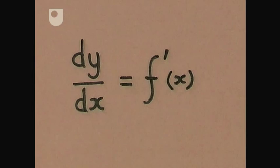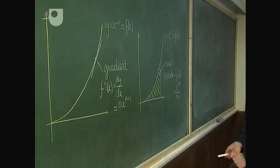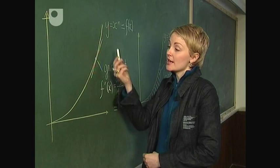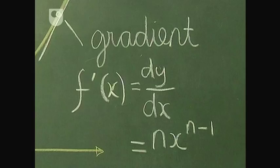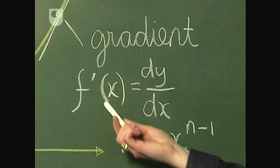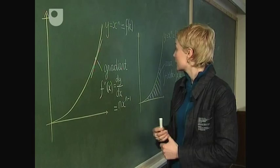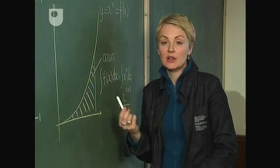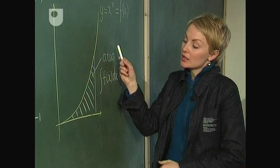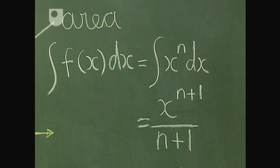The result of all these new ideas is today's calculus. So if we want to find the gradient of a curve at any point on the curve, we use the derivative notation — F dashed of X, or dy by dx — and in many cases there are standard formulas. Also, if we want to find the area under a curve, we use Leibniz's long S, the integral notation, and again there are many standard formulas.